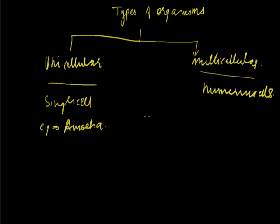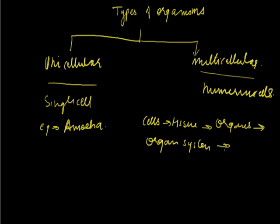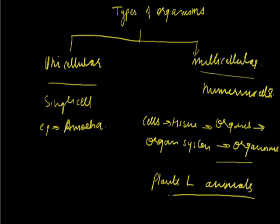So we can write it like this like a group of cells combined to form tissue. Many tissues combine to form organs. Many organs if they start functioning for a one particular function that is called as organ system and many organ systems are found in a complete individual organism. So in this way this is a hierarchy of the multicellular organisms and the most common example is all the plants and animals multicellular plants and animals are included in this category.